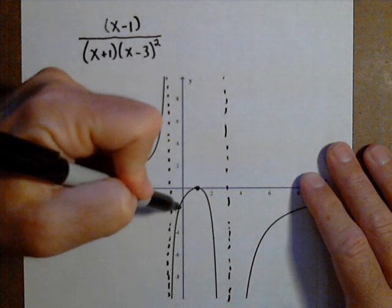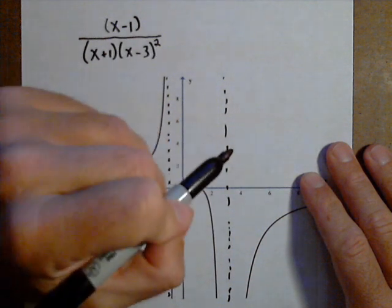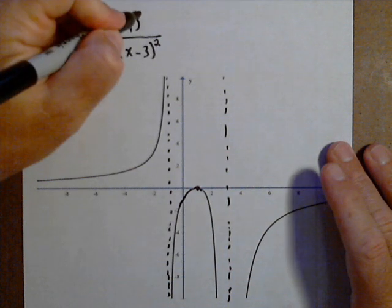Again, we want to check for multiplicities. Notice it goes up, hits the x-axis, and bounces off. That means an even multiplicity, so at least squared.